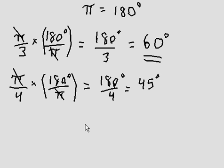Now let's do the reverse. Let's say I have 135 degrees and I want to convert that into radians. I multiply it by pi over 180 degrees.